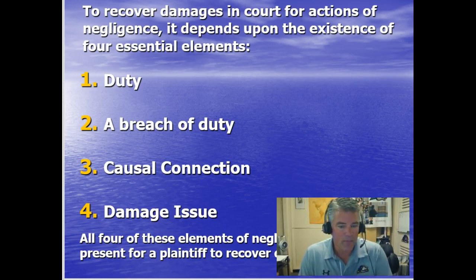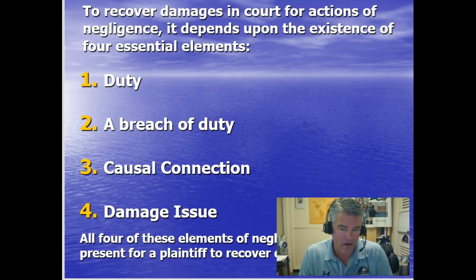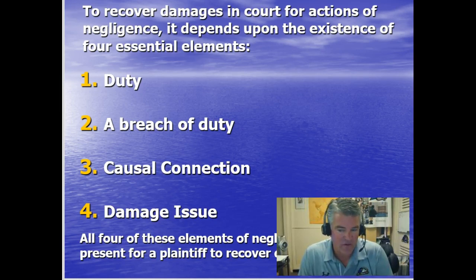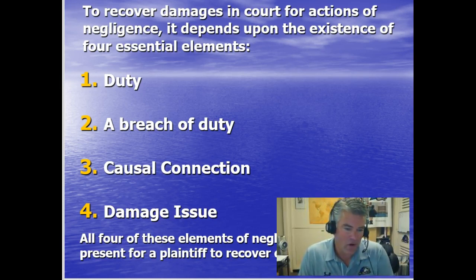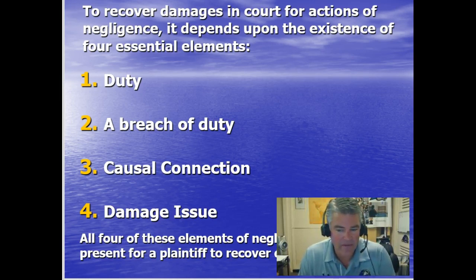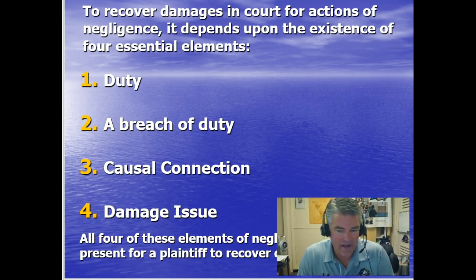The second element is breach of duty — a failure on a person's part to conform to the required standard of conduct. The defendant must be shown to have used unreasonable conduct in carrying out responsibility to the injured person. The key question is: is the act to protect in accord with the standard of care a professional should give to the person with whom there is a special relationship? Third is causal connection — a reasonably close causal connection between the conduct and the resulting injury, also known as proximate or legal cause. It must be shown that the breach of duty actually caused the injury, with a direct relationship between the action or inaction of the defendant and the injury that occurred.